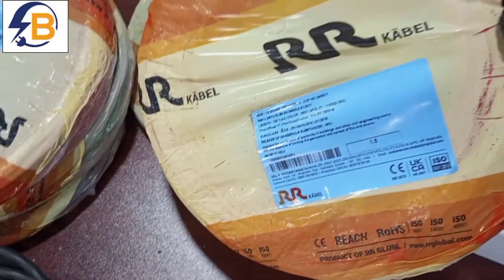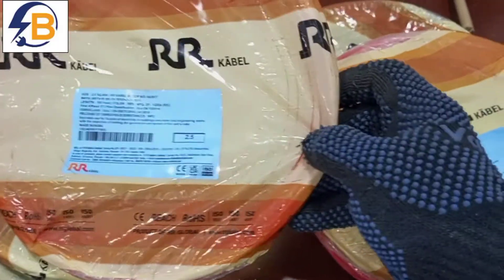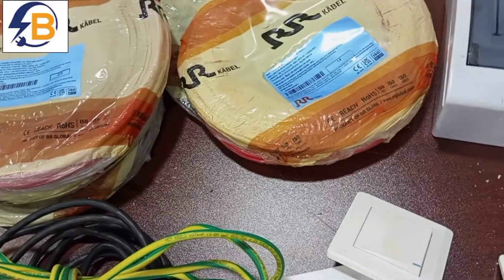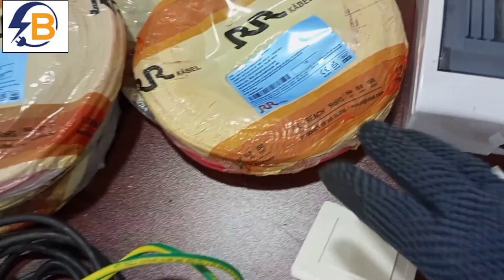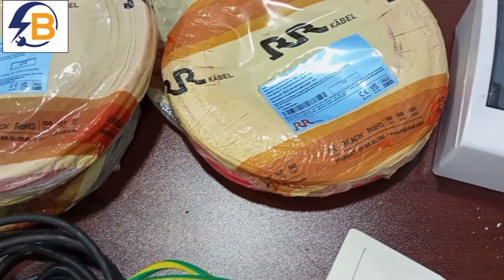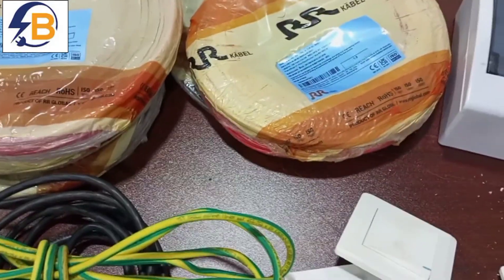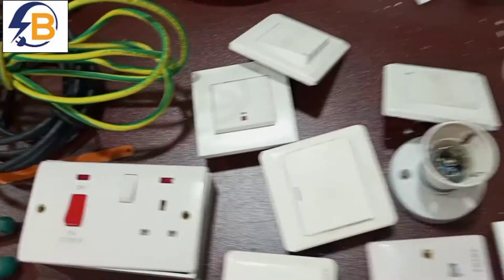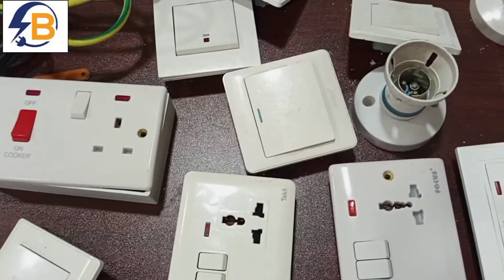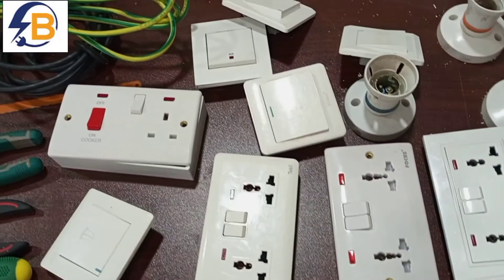This is 1.5 millimeter squared for our lighting circuit and then this is 2.5 millimeter squared that we'll be using for the power circuit. I have a lot of videos already that explain the sizes of cables you can use for your lighting, your fan. If you want to access those videos, just as you are watching this video, just look below it, go down and click on more, so more will let you see all the videos I have shared under this one.